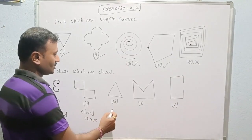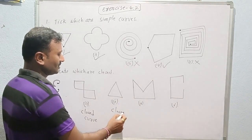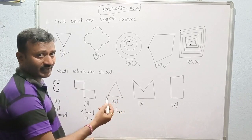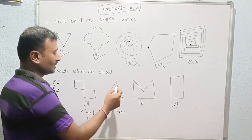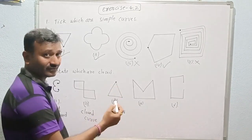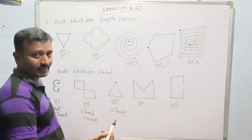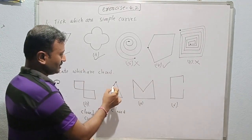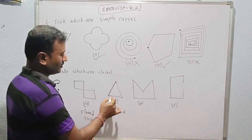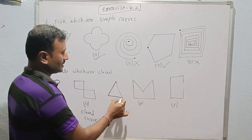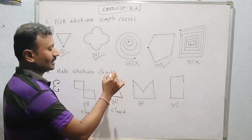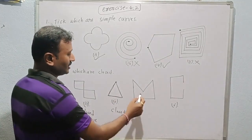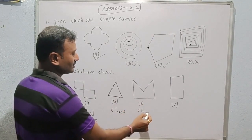This next figure is closed. Whenever we select any one point — one vertex — and try to draw in clockwise or anticlockwise, we can understand it will be closed. Is it intersecting anywhere? No, not intersecting. At the end points only it is intersecting. So this is a simple closed curve. Let us take this next one — this is also closed.